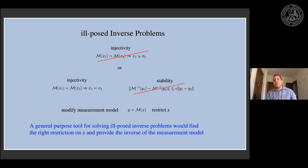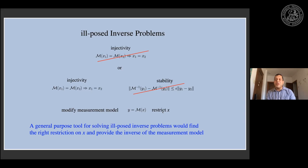When you see the claim that deep learning solves ill-posed inverse problems, not only is the claim that you're inverting the measurement model, but also that you're using the data to find this restriction. That's quite a tall order: you have to find the right restriction on the parameter set and also provide the inverse. Any questions up to this point? I've covered all the general theory, and now we'll get into the specifics of CT.